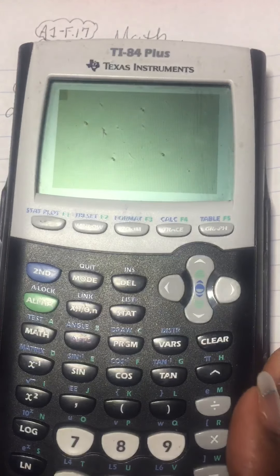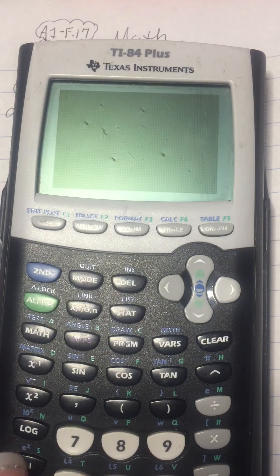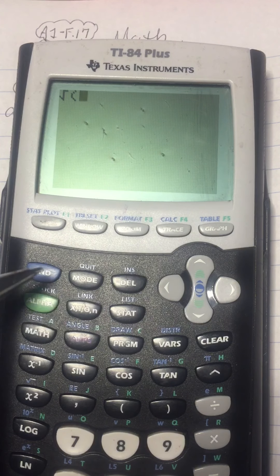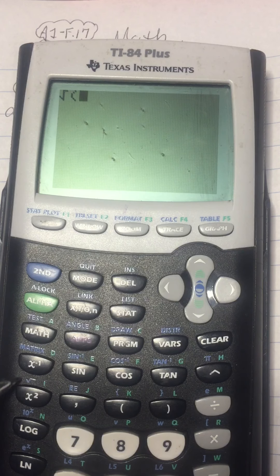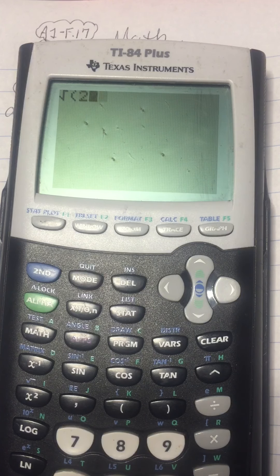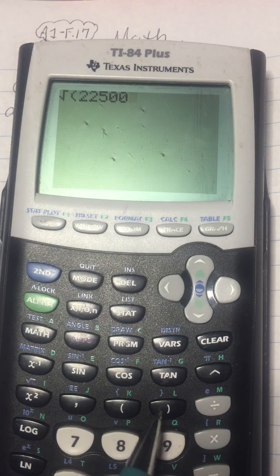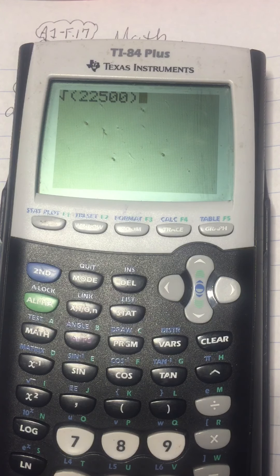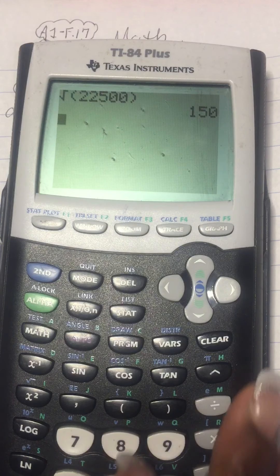So what I'm going to do is hit second, and then this button, which is the X squared button, but since I hit the blue button, it activates the square root button. 22,500. You can close your parentheses if you want. It's a good practice. Enter, and it's 150.